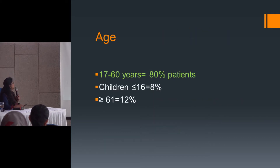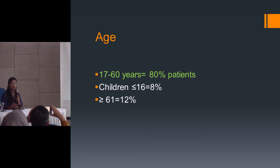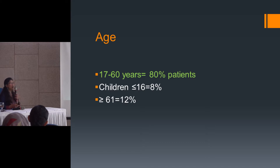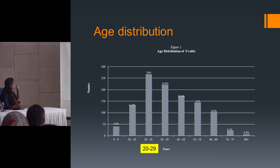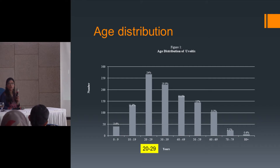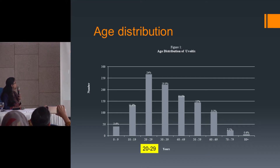Looking at the data, the age group 20 to 60 years — the most active working group of our society — accounts for 80 percent of uveitis cases, whereas children account for 8 percent and those above 61 years only 12 percent. Breaking it down further, the age group 20 to 29 is the most affected, representing almost one quarter — about 24 percent — of all uveitis patients, which is the most active group.